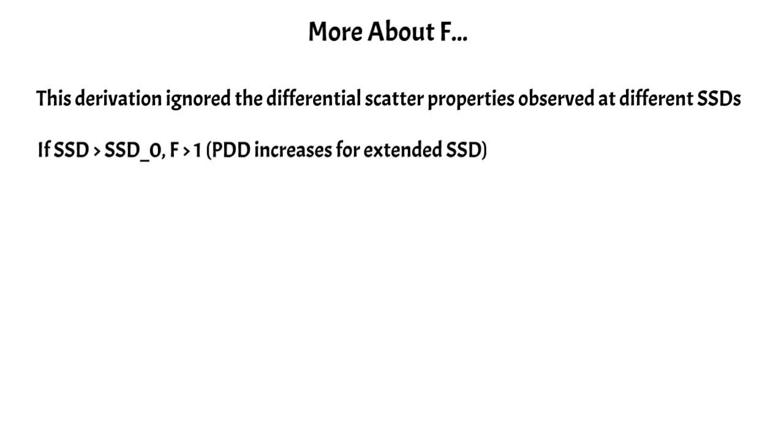In addition, if our SSD is increased relative to our original SSD, the Maynard factor is greater than one. You can go prove this based on my previous derivation. But this just goes to show that your PDD will actually increase for the extended SSDs. On the contrary, if our SSD is shorter, then the Maynard factor is less than one, and our PDD will actually decrease for a shorter SSD. So this all comes from that inverse square and how the doses are related at different SSDs.